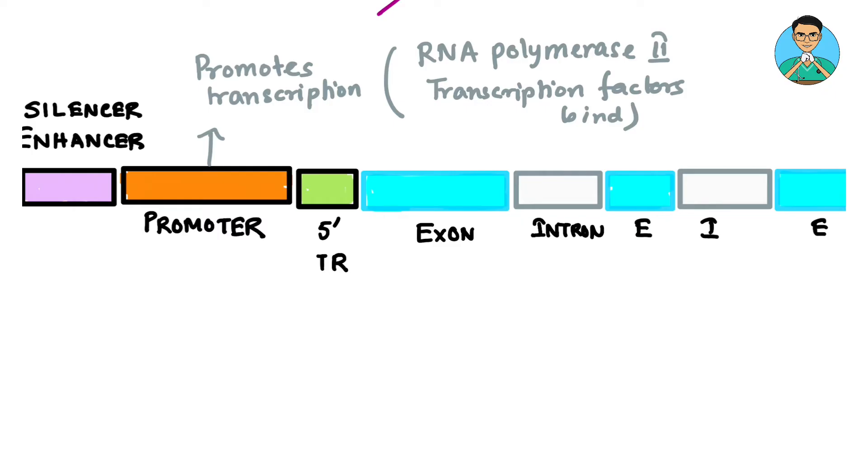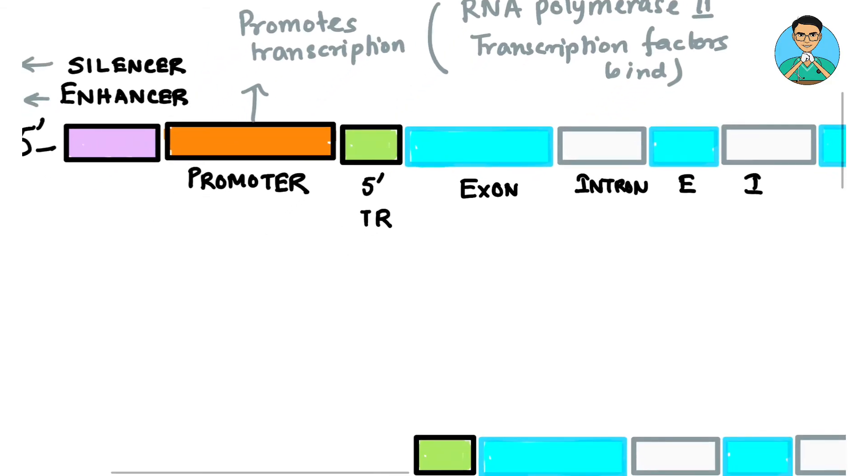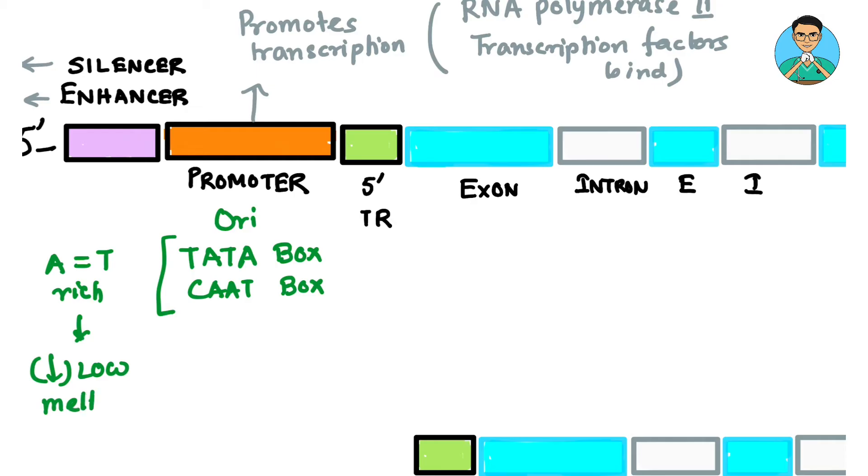Promoter does also another work that is when it comes to DNA replication. Promoter acts as the origin of replication or ORI. Because it contains certain TATA sequences which is known as the TATA box or CAAT box. So these structures are rich in AT and hence have low melting temperature and hence they act as the origin of replication.